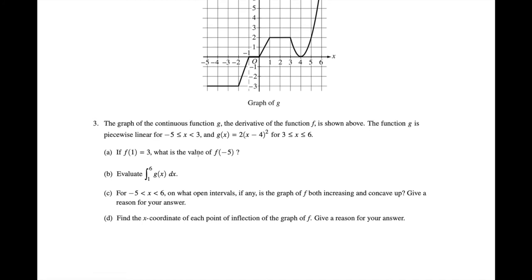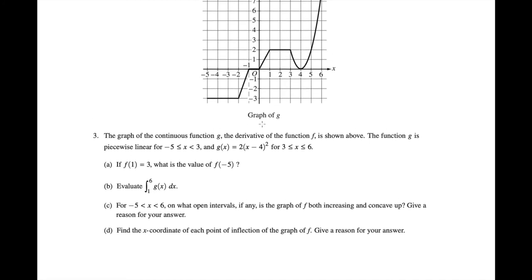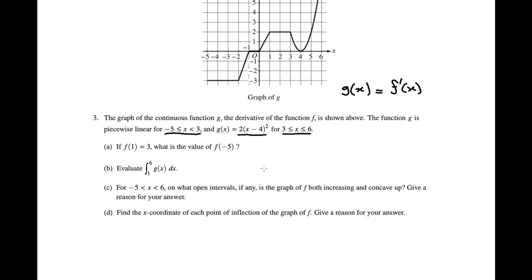So let's take a look at this. We're given the graph of this function g, and we're told that g(x) is a continuous function which is the derivative of some other function f(x). We don't actually know anything about f(x), but we're told that g(x) is the first derivative of f(x). We're also told that g(x) is piecewise linear for the interval from negative 5 to 3 (not including 3), and that it takes on a quadratic — 2 times (x minus 4) squared — from 3 to 6.